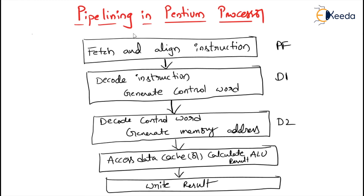Next is the second decode stage — we can represent it as D2. In the D2 stage, the CPU decodes the control word from D1 for use in the execute stage. In addition, the CPU generates addresses for data memory references.